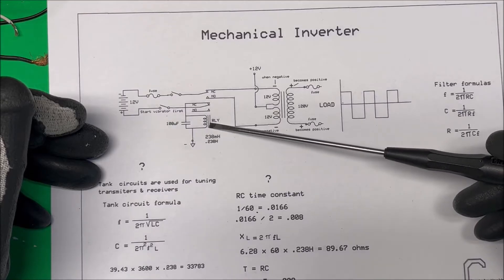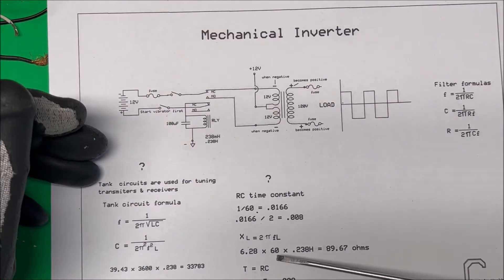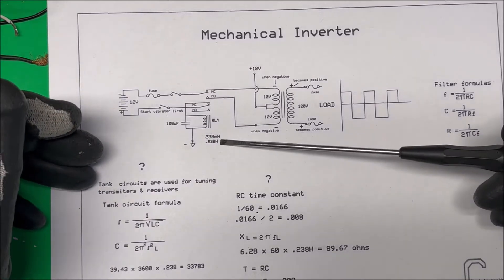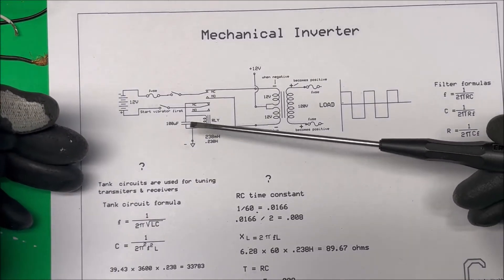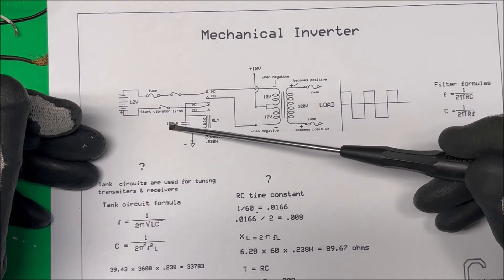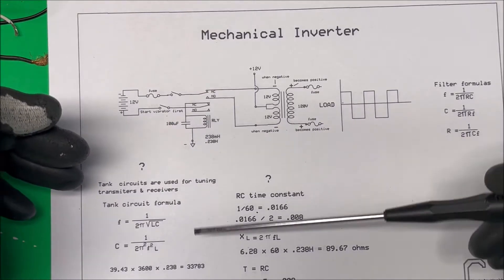Then I said, well there's an RC time constant and we know the Henrys of the coil here. So I just did C equals T over R and that came out to 88 microfarads. So I had 100 at first, but I ended up putting a 47 microfarad in there, about half in between these two.